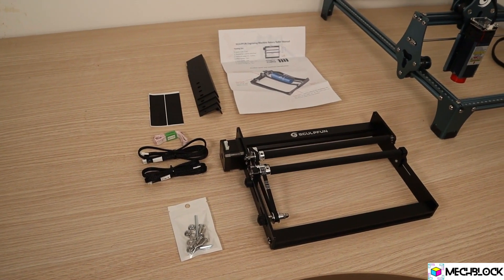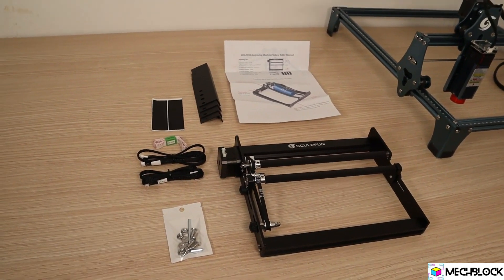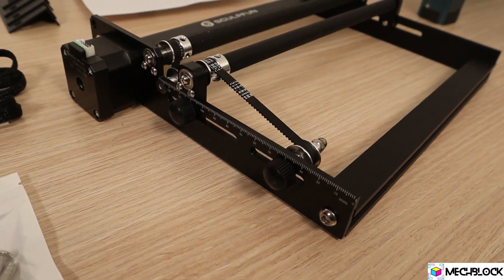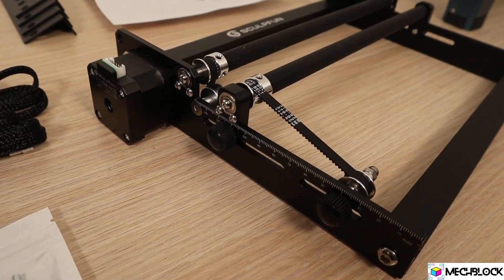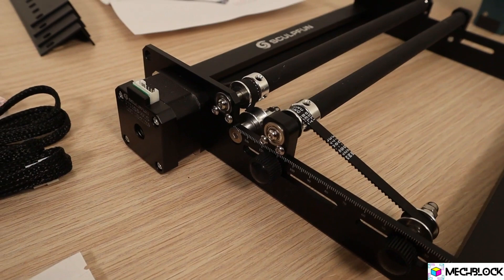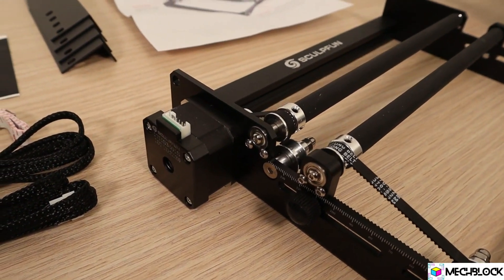SculptFun has finally released its own version of the Rotary Roller attachment for use with their laser engravers. But the attachment can also be used with Atomstack, Ortur, and Najee laser engravers and other similar machines.